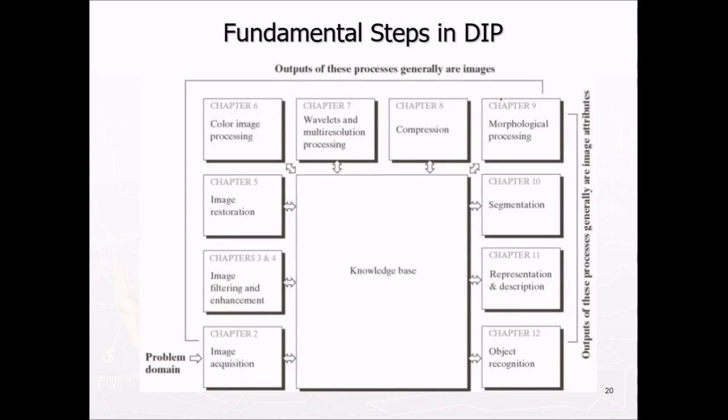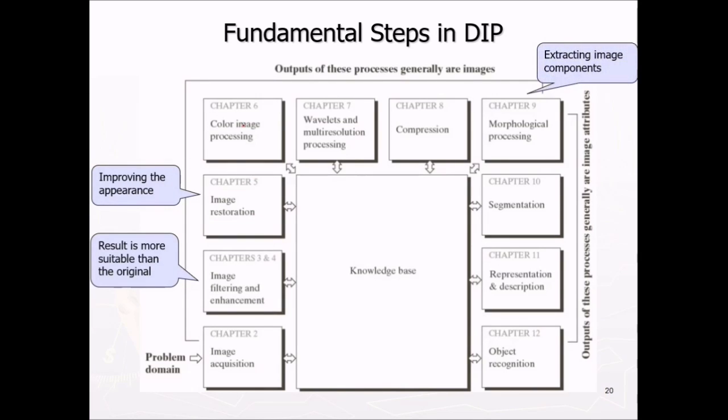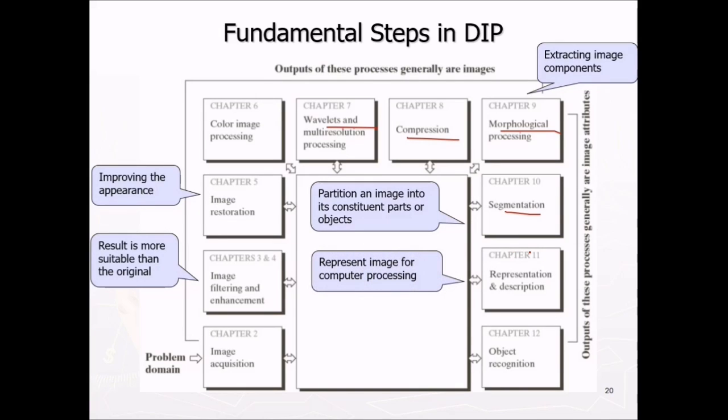These are the fundamental steps in digital image processing. We start with image acquisition. Then we do image filtering and enhancement. Result is more suitable than the original. Then you have image restoration to improve the appearance. Then color image processing or you can go to wavelet multi-resolution processing compression and morphological processing. That is extracting image components. Then segmentation. This partitions an image into its constituted parts or objects. Then we have representation description, representing the image for computer processing. And finally this object recognition.